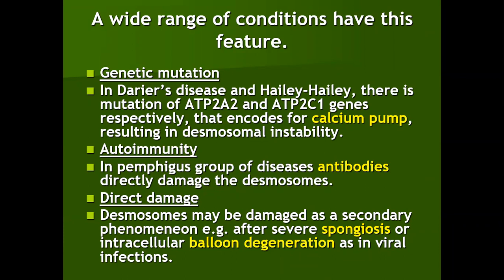Acantholytic disorders also occur because of autoimmunity. For example, in pemphigus group of diseases, the antibodies directly damage the desmosomes causing acantholysis. Direct damage to desmosomes may occur as a secondary phenomenon due to severe spongiosis that occurs in eczema, or intracellular balloon degeneration as we see in viral infections.